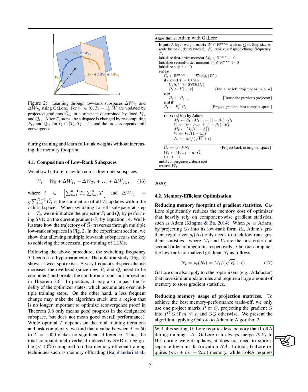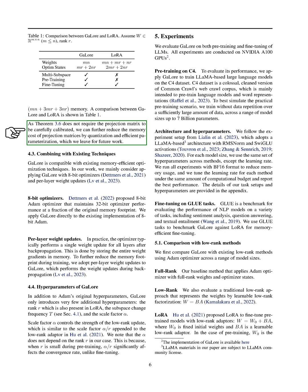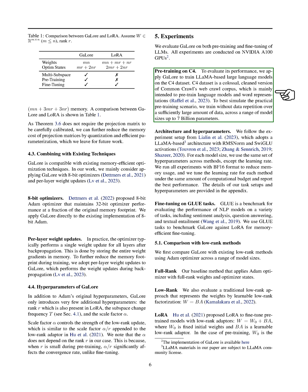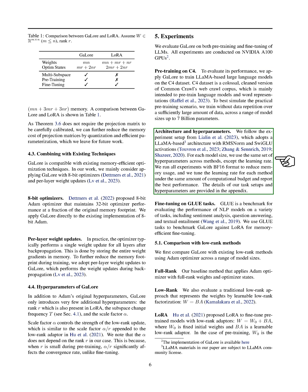By using a single projection matrix, GaLore optimizes memory usage during training, requiring less memory than other methods like LoRA. We also explore combining GaLore with existing techniques such as 8-bit optimizers and per-layer weight updates to further enhance memory efficiency. GaLore introduces only a few additional hyperparameters, making it easy to integrate into existing optimization frameworks. We conduct experiments to evaluate GaLore's performance in pre-training and fine-tuning large language models on the C4 dataset and GLUE tasks. Our results show that GaLore offers improved memory efficiency without compromising model performance, making it a promising approach for training deep learning models.